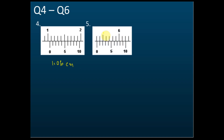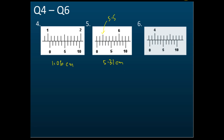Next one — what's the reading? This is 5.5, 5.4, 5.3, and it coincides with the first mark here — 0.01 — so 5.31 cm. How about this one? Yes, that's correct — 3.83 cm.